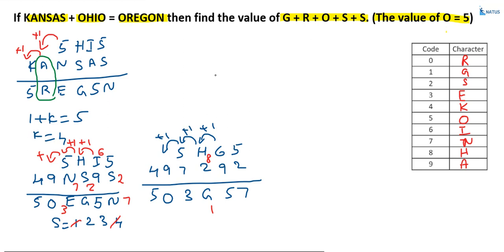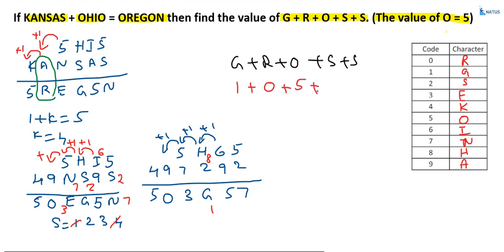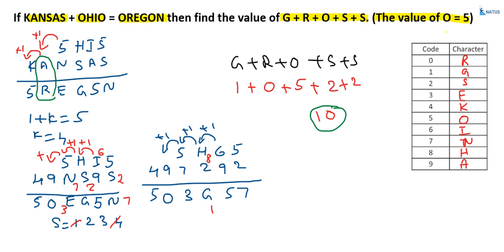We require G plus R plus O plus S plus S. G equals 1, R equals 0, O equals 5, S equals 2, S equals 2. The sum is one plus zero plus five plus two plus two equals 10. That is the required answer. If you have any doubts, put a comment in the comment box. Please subscribe to my channel. Thank you.